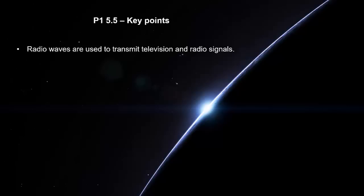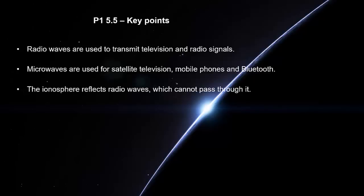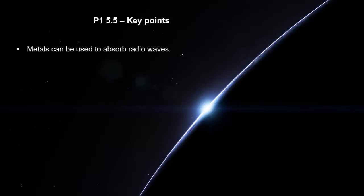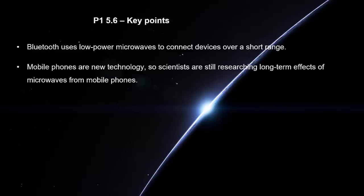Radio waves are used to transmit television and radio signals. Microwaves are used for satellite television, mobile phones and Bluetooth. The ionosphere reflects radio waves, which cannot pass through it. Microwaves need line-of-sight transmitters as they are not diffracted around hills. Metals can be used to absorb radio waves. Metal reflects microwaves. Radio microwaves have a heating effect. Bluetooth uses low-power microwaves to connect devices over a short range. Mobile phones are new technology, so scientists are still researching the long-term effects of microwaves from mobile phones.